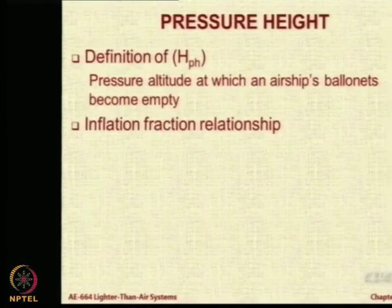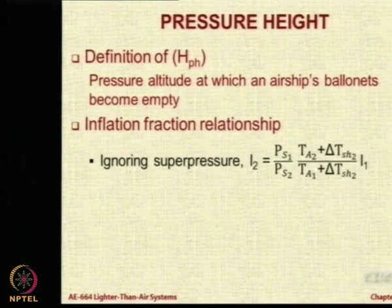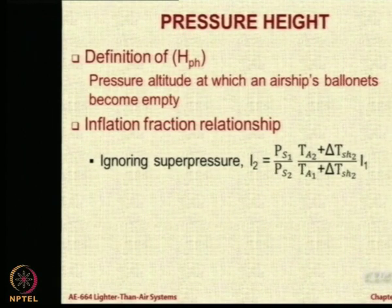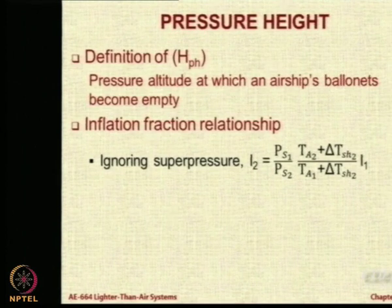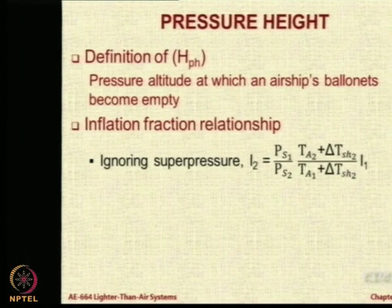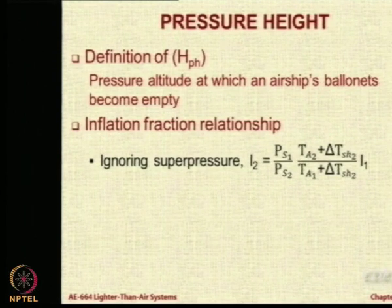Let us recall the inflation fraction relationship applicable. If we ignore superpressure, the inflation fraction at any operating condition 2 is equal to the ratio of pressures at condition 1, P_s1 upon P_s2, into the ratio of temperature at altitude 2 upon altitude 1, times the inflation fraction at condition 1. In the temperature I have also included superheat terms. So I have ignored superpressure but retained the superheat terms. This was already derived earlier and is reproduced here for continuity.